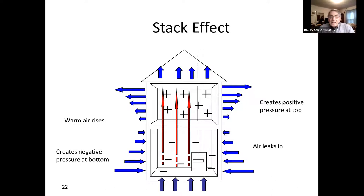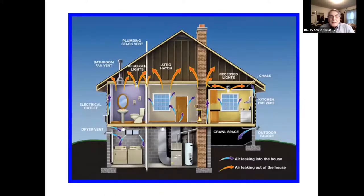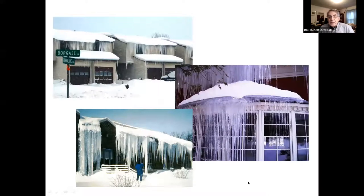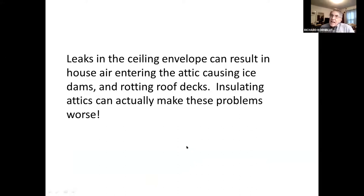If you want to insulate an attic, you have to address both the insulation problem and the air leakage problem, because warm air is going to leak out the top of the building — through bathroom vents, recessed lights, and other sources. There are also leaks at the bottom through the foundation where it meets the framing. If enough heat leaks out of the top of the building in wintertime, you might get icicles and ice dams. People who have insulation in their attic can still get icicles and ice dams — so how does that happen?